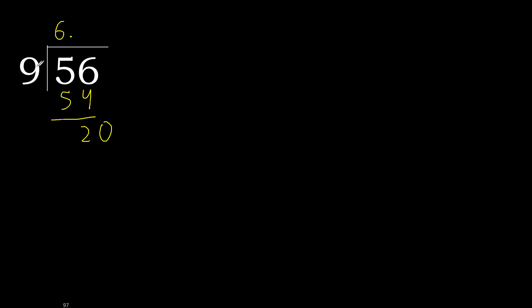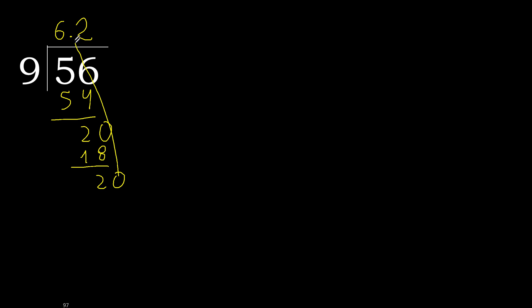29. Multiply by 3 is greater. Multiply by 2 is 18, which is not greater. Subtract. Complete. Complete.